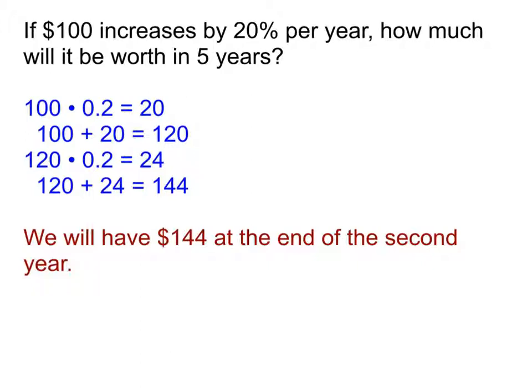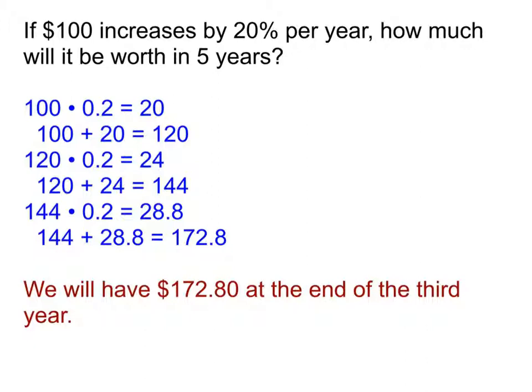The next year, is it going to go up by $24? No — it goes up by even more than that. We can keep going through and doing the same calculation every single year. So the third year, I figure out what 20% of $144 is. That's $28.80. And if I add that to the $144 that I started that year with, I end up finding out that at the end of the third year I have $172.80.